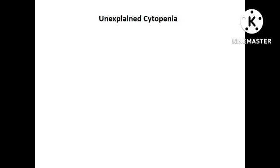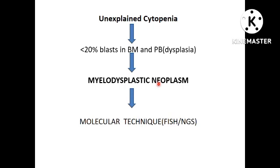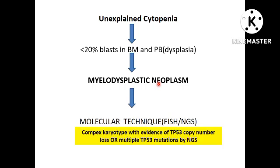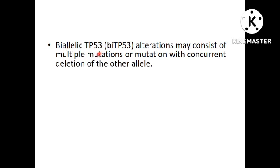In another case scenario with unexplained cytopenia, you have more than 5% and less than 20% blast both in the marrow and peripheral blood, along with dysplasia — calling it a myelodysplastic neoplasm on morphology. If molecular testing by FISH or NGS reveals complex karyotype with evidence of TP53 copy number loss or multiple TP53 mutations by NGS, this fits the diagnosis of MDS with biallelic TP53 inactivation.